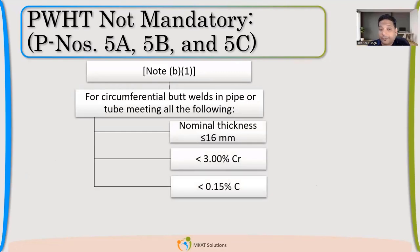Now there is some exemption for P-number 5 also. If my nominal thickness is less than 16mm, all of this if they are meeting then only I will be able to get the exemption, otherwise not. So the chromium percentage should be less than 3%, my carbon should be less than 0.15%, then only I will be able to get that exemption for 16mm or less thickness. Otherwise I will have to do post-weld heat treatment. So if I am not doing post-weld heat treatment, I will have to maintain the preheat of 150 degrees Celsius.